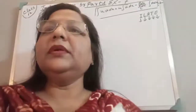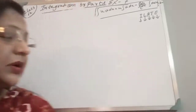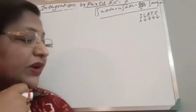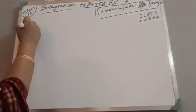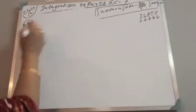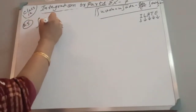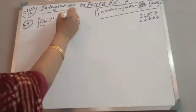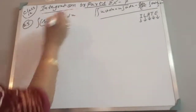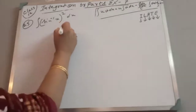Class 12, we will now solve sum number 25 from Exercise 7 — integration by parts. The integral is (sin⁻¹x)².